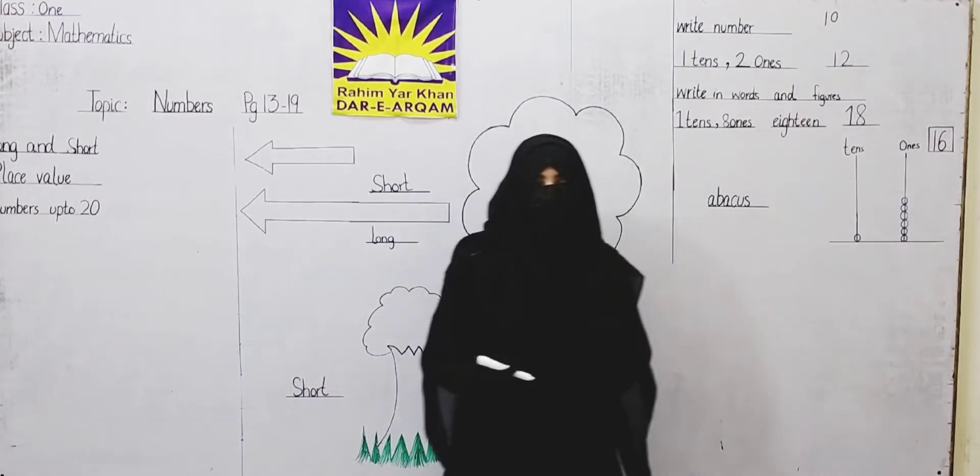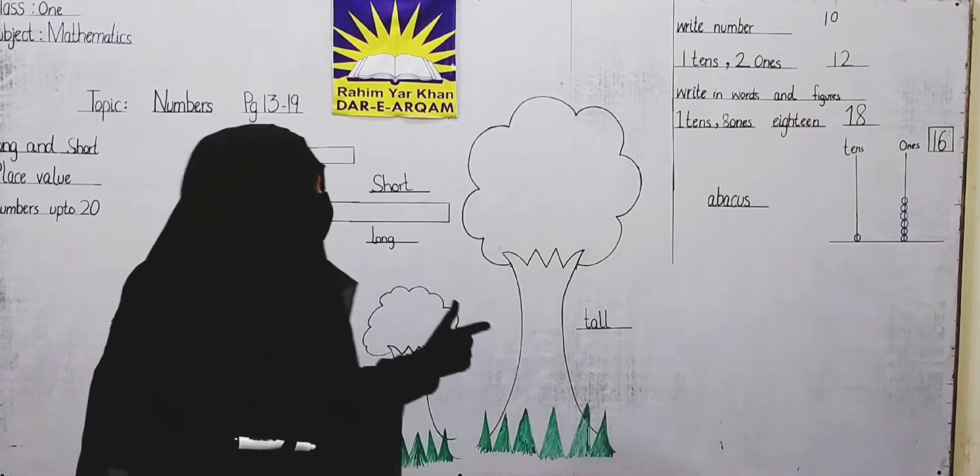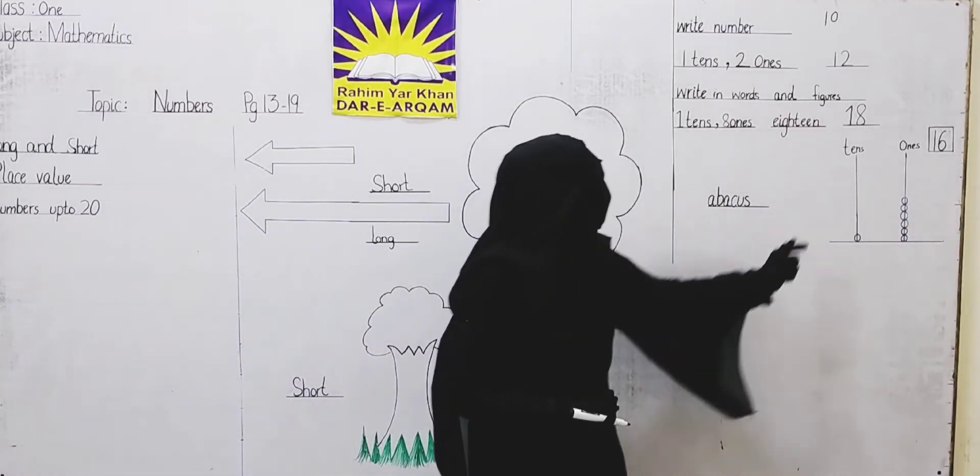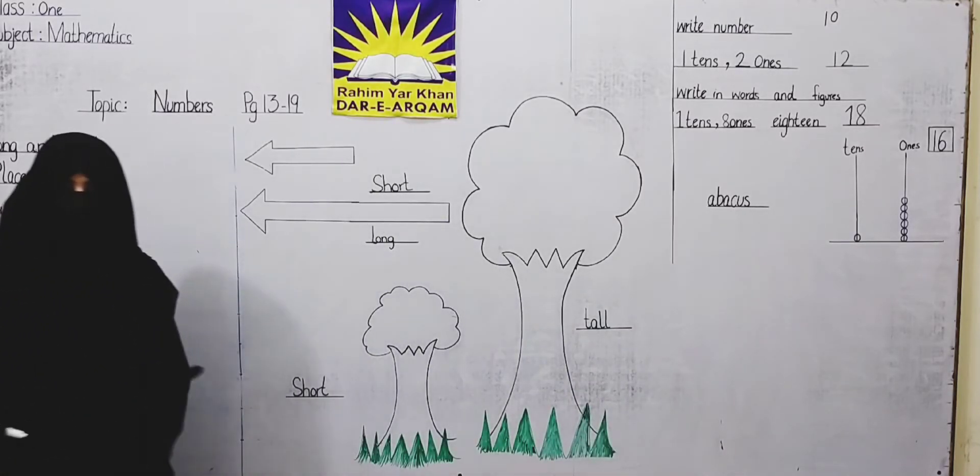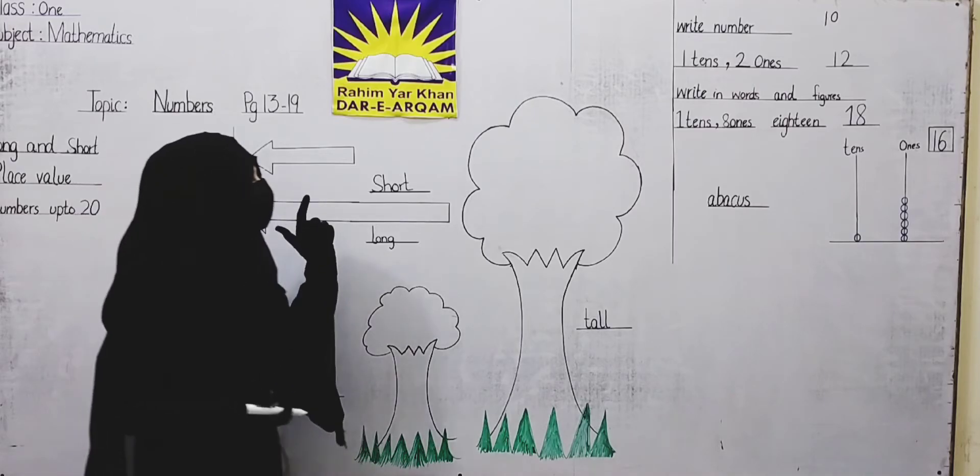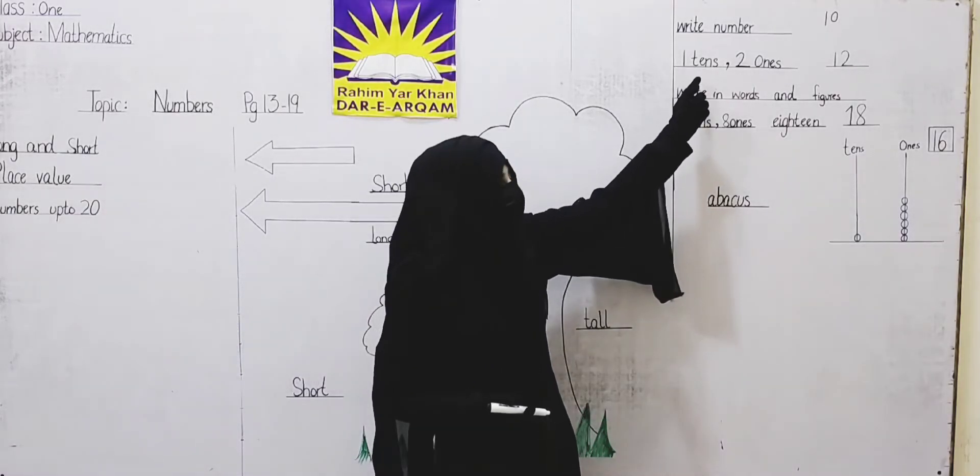When we have counting, we will count the ones to place the ones. Here we have seen this one. Now we have seen this one. Tall, long, short. We have seen this one. Numbers up to 20. We have seen this one.